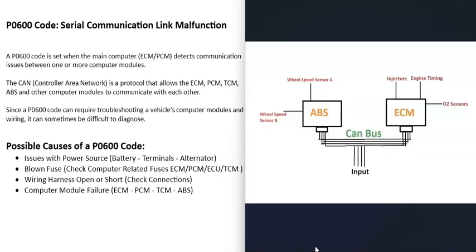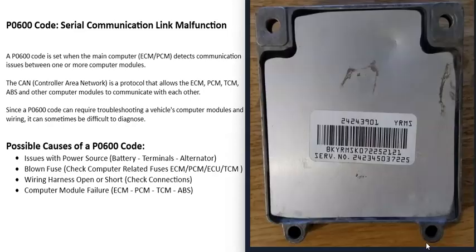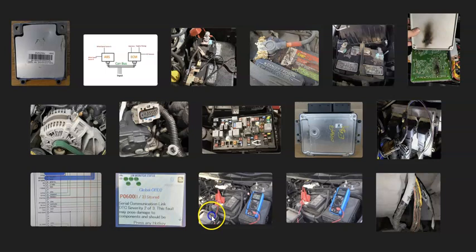For example, if you're getting the P0600 code along with a lot of wheel speed sensor codes at the same time, that could point to a bad ABS module. Also, sometimes computer modules get burnt components on the board — not always, but it does happen. If you smell a burnt smell coming from one of the control modules, that can point to a problem with that module.